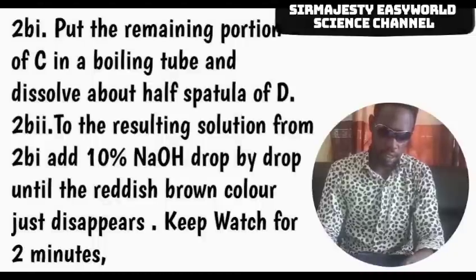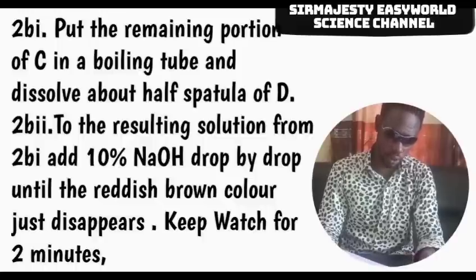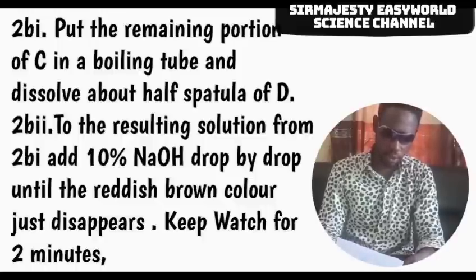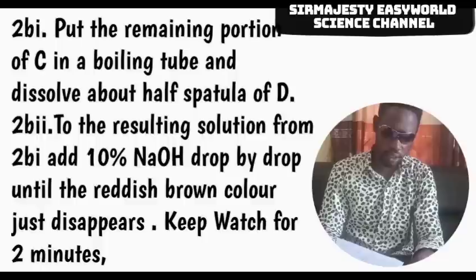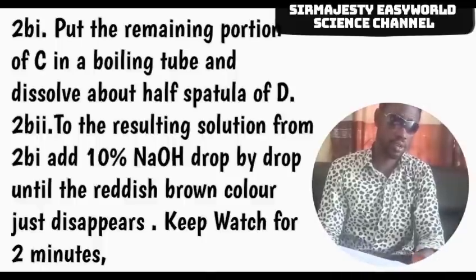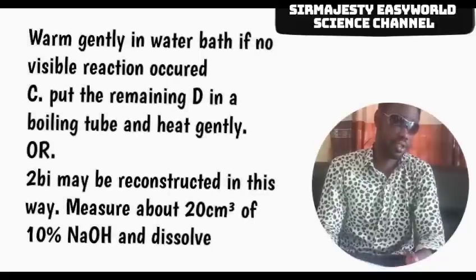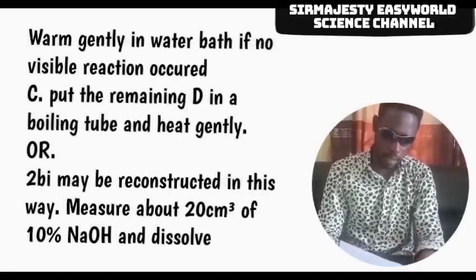For 2B, put the remaining C in a test tube and dissolve about half a spatula of specimen D — iodine crystal — into it. To the resulting solution in 2BI, add 10% sodium dioxide dropwise until the reddish-brown color disappears. Then observe what happens over the next 2 minutes. If no reaction occurs, warm gently in a warm water bath.